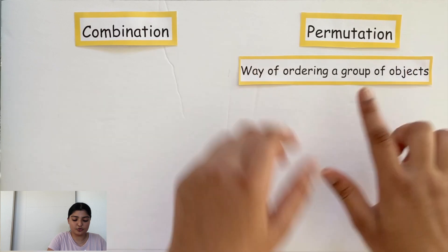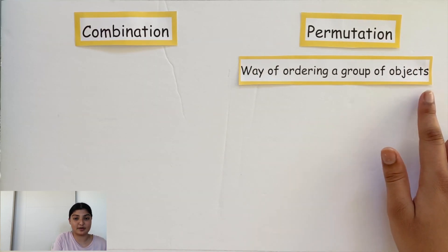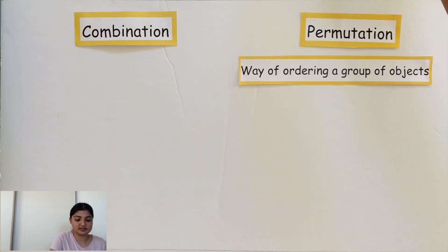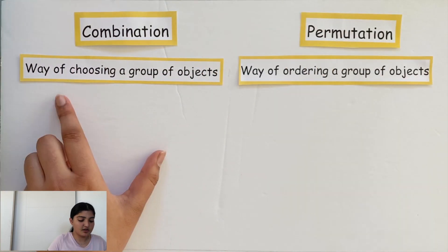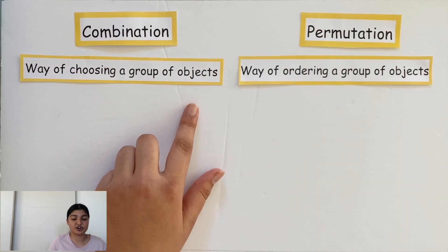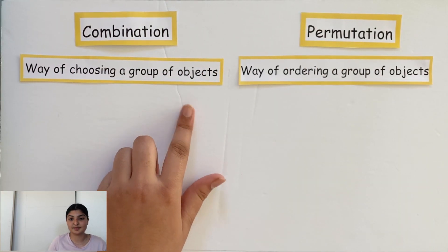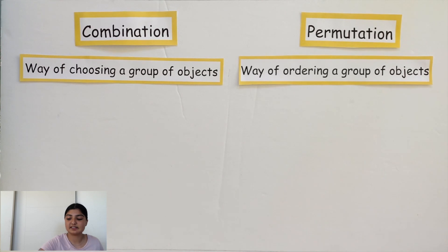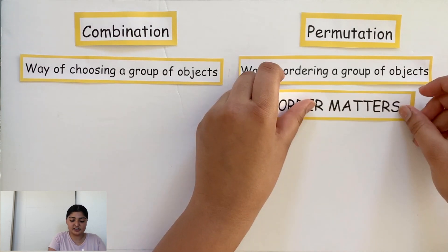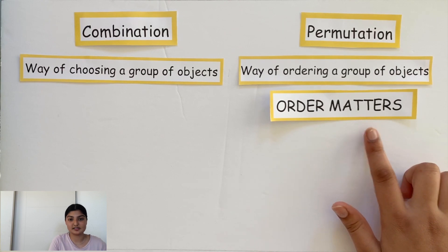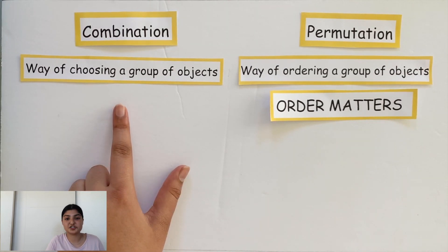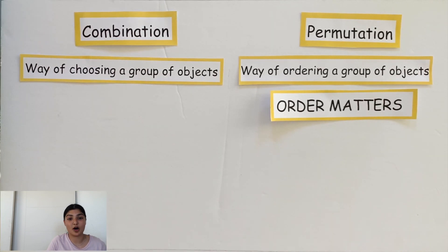Permutations are the way of ordering a group of objects, while combinations are the way of choosing a group of objects. Keep in mind that for permutations, the order matters, while for combinations, the order does not matter — all we're doing is grouping the objects.